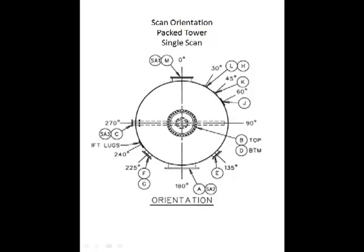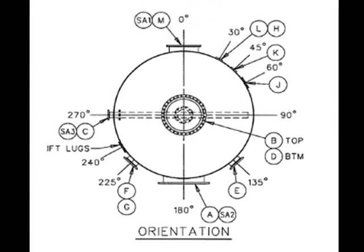This is an example of a gamma scan of a packed tower where the results indicated that fouling was present. Because fouling was suspected, a single scan of the tower was performed rather than a full grid scan.